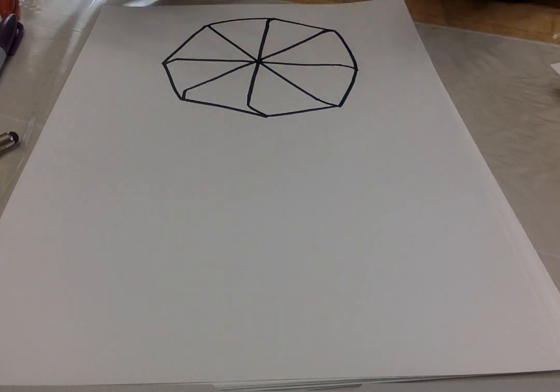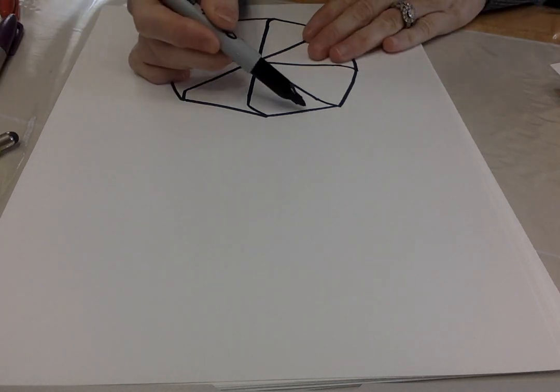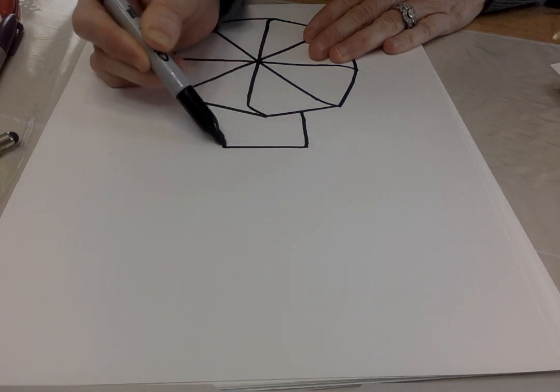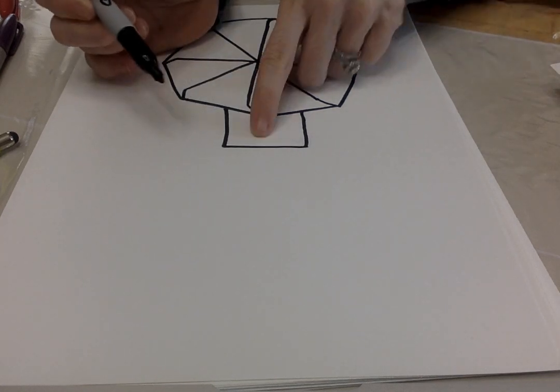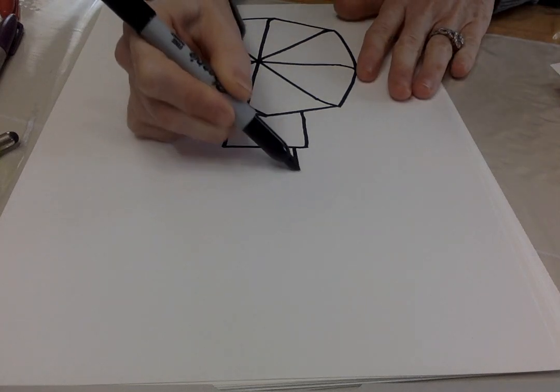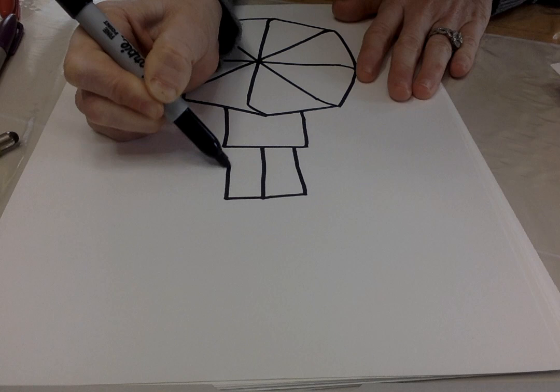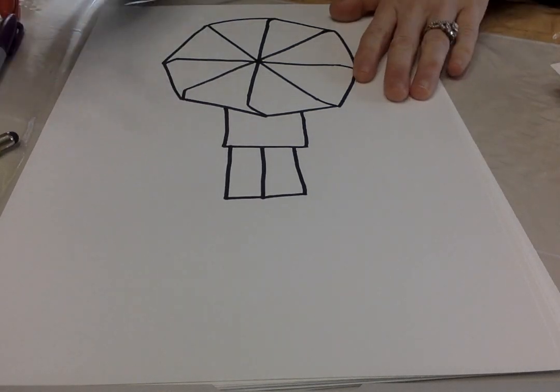Now usually when it rains, even if you have an umbrella, you wear a long coat or a raincoat. So there's kind of my long coat and then I'm going to make just pants, the legs.